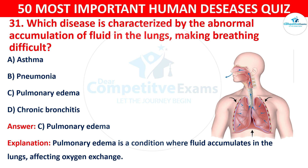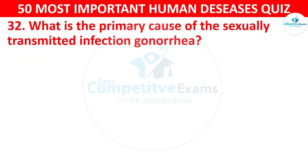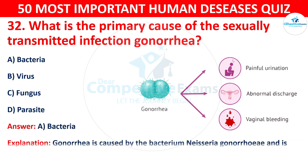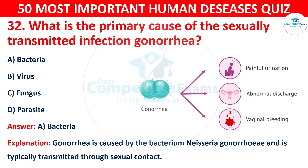Question 32: What is the primary cause of the sexually transmitted infection gonorrhea? The options are: A) Bacteria, B) Virus, C) Fungus, or D) Parasite. The correct answer is A — bacteria. Gonorrhea is caused by the bacterium Neisseria gonorrhoeae and is typically transmitted through sexual contact.